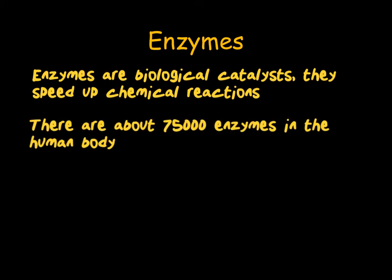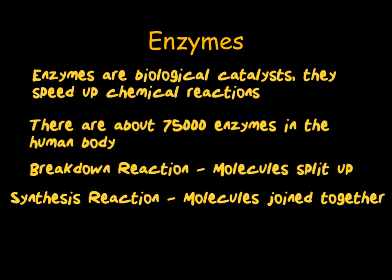In chemical reactions, molecules either split apart or are joined together, and both of these can be carried out by enzymes. These can be synthesis reactions where two molecules are brought together — also known as an anabolic reaction — or a catabolic reaction where they are split apart in a breakdown reaction. In order to explain how enzymes can act as a catalyst, we need to look at the lock and key model.